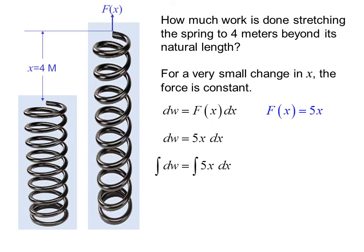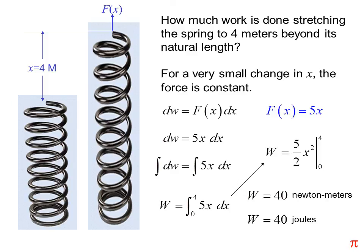If we integrate both sides, we get w equals the integral from 0 to 4 of 5x dx. And remember, integration is just adding an infinite number of infinitely small things. This gives us w = 5/2 x² evaluated from 0 to 4, or w = 40 newton-meters. Newton-meters are also known as joules. So the work equals 40 joules.